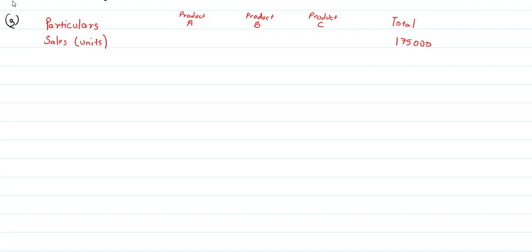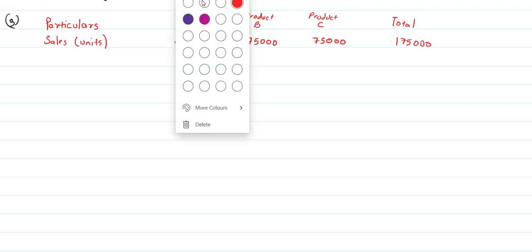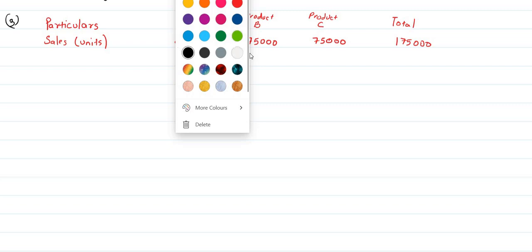In part three, the total number of units being sold remains 175,000, but the sales mix has changed. Previously product A was 25,000, B was 100,000 (implied earlier as 1 lakh), and C was 50,000. In the new sales mix, product A is 25,000 units, product B is 75,000 units, and product C is also 75,000 units. We need to find the new breakeven point.